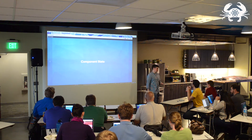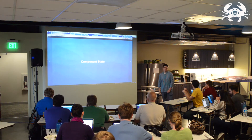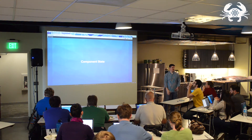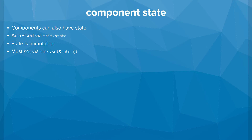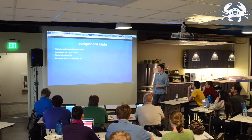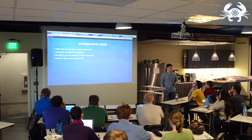Components have another variable that goes into how they end up being displayed on the screen. You have props, which are passed down from other components, and then you also have component state. Component state is maintained internally within that component. You can update it in reaction to certain events occurring or getting new data from the server. You access state just like you access props — it's this.state. State is immutable, and you can't just change state. You won't get an error, but you'll get funky behavior as your apps get more complicated. You need to use this.setState to change that.